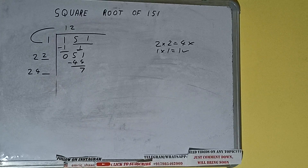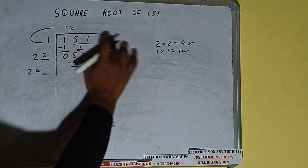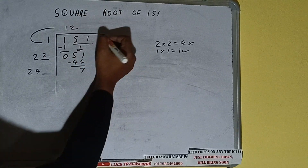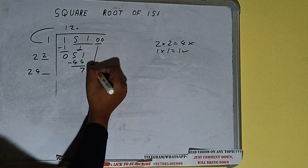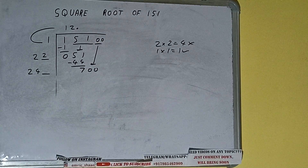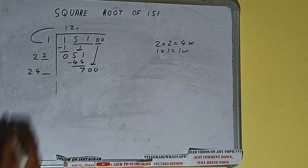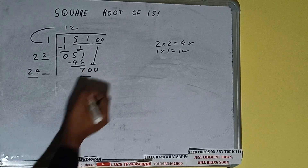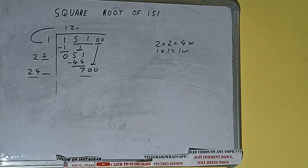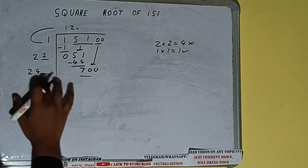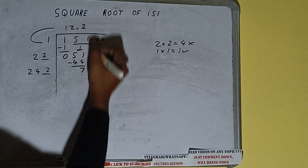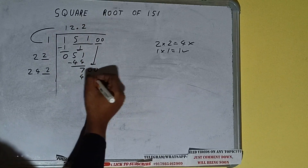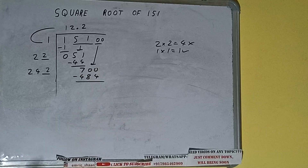This number we need to make it bigger but we don't have more pairs, so we'll put a decimal. Once we put decimal, we can bring a pair of zeros down and it will be 700. Now we can compare: 24 times 2 is 48, so we can write 2 here.